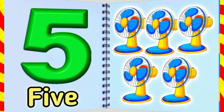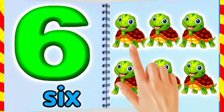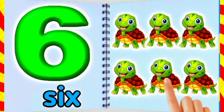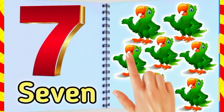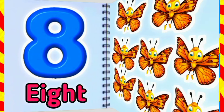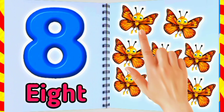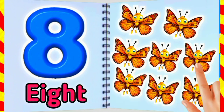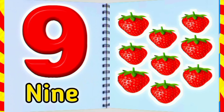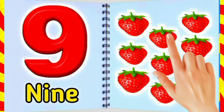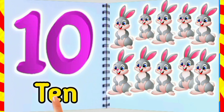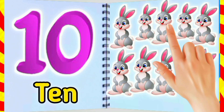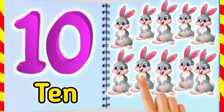Six — six turtles: one, two, three, four, five, six. Seven — seven parrots: one, two, three, four, five, six, seven. Eight — eight butterflies: one, two, three, four, five, six, seven, eight. Nine — nine strawberries: one, two, three, four, five, six, seven, eight, nine. Ten — ten rabbits: one, two, three, four, five, six, seven, eight, nine, ten.